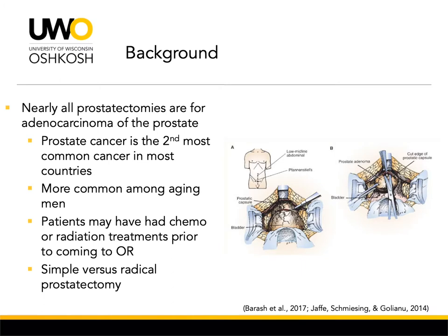Nearly all prostatectomies are for adenocarcinoma of the prostate, and prostate cancer is the second most common cancer in most countries. This disease is more common among aging men versus a disease that affects the young male population. Patients may have also had chemo or radiation treatments prior to coming to the operating room. There are some differences between simple versus radical prostatectomy. A simple prostatectomy is not as common a procedure anymore due to the advancement of alpha-1 adrenergic inhibitors and 5-alpha reductase inhibitors, and is associated with less blood loss and lower complication rates in addition to lower pain scores.